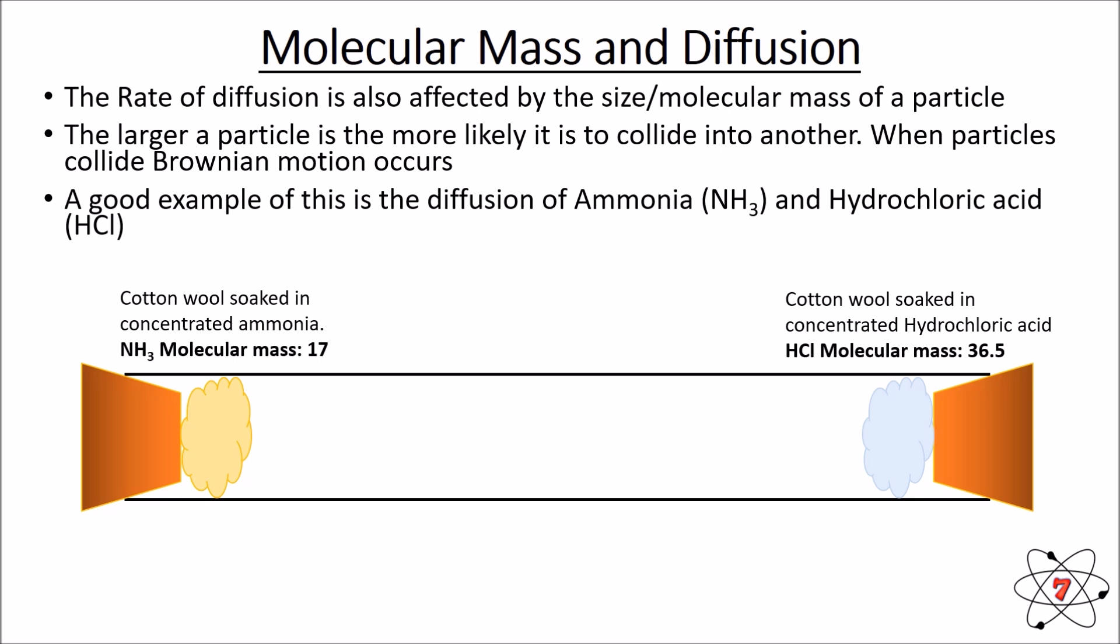The gases will then diffuse. Now, if the particles diffuse at the same rate, we would expect the reaction to occur in the middle, but it doesn't. Where the two gases meet, a reaction occurs and a smoke ring forms and we can see that the smoke ring is much closer to the hydrochloric acid. This is because the particles of hydrochloric acid have diffused more slowly and the particles of hydrochloric acid have diffused more slowly because they are larger than the particles of ammonia.